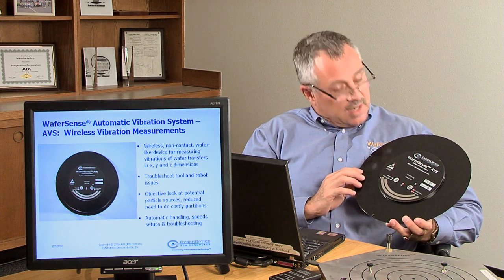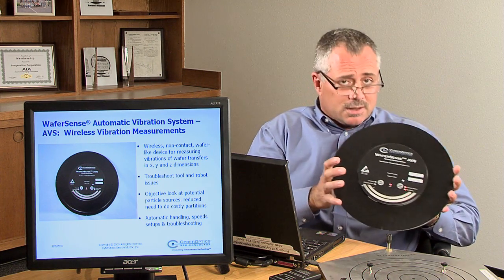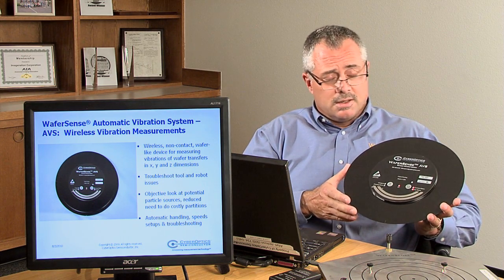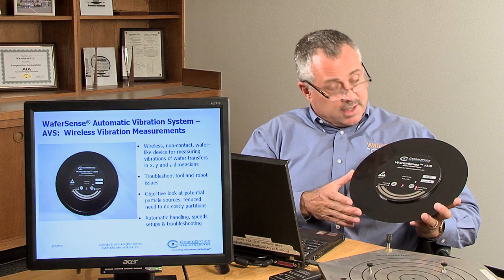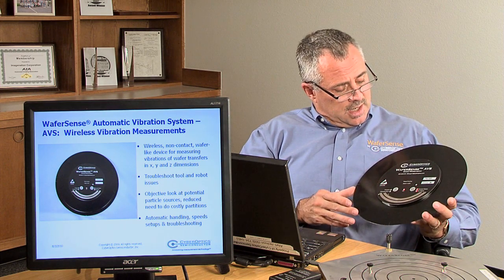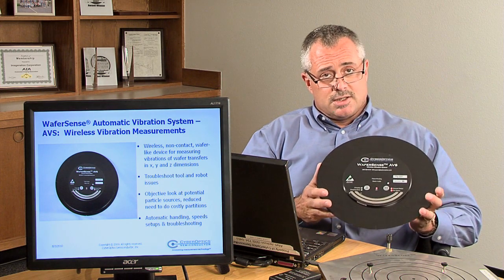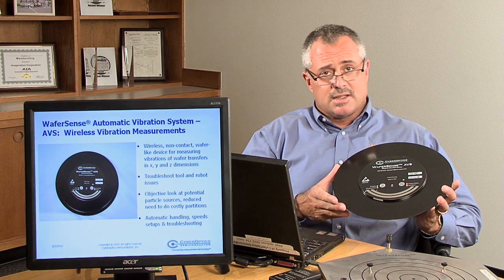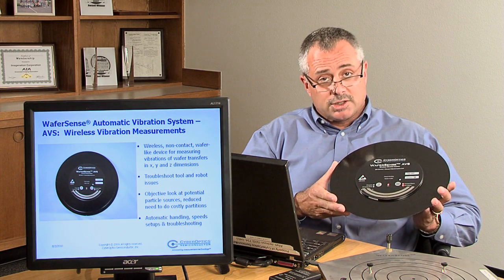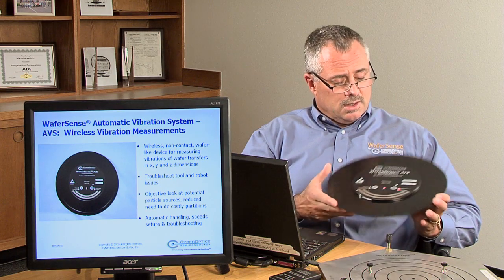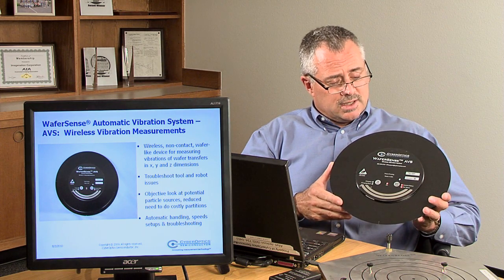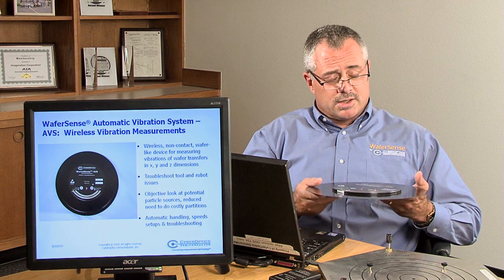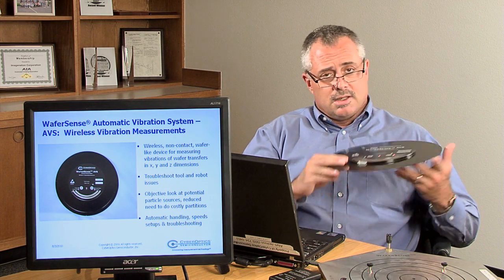Specifically, we have a number of wafers that do a number of different tasks in the semiconductor process and in the fab. The one I have here in my hand is our newest in the WaferSense line — it's the WaferSense AVS vibration detection wafer. What our AVS wafer does is it measures vibration in both X, Y, and Z space.